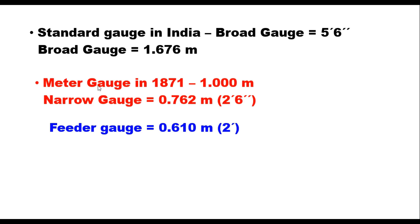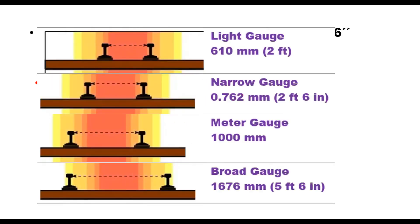In 1871, to build cheap railways, the British adopted 1 meter as the gauge width and it was called the meter gauge. For development of hilly regions and core areas, a narrow gauge of 2 feet 6 inches or 0.762 meters was also adopted. A feeder gauge of 0.61 meters or 2 feet was adopted for industrial purposes. So in nutshell there are four gauges: broad gauge for stability against strong monsoon winds, meter gauge as an economical measure, narrow gauge for hilly and core regions, and light gauge primarily for industrial purposes within an industry.